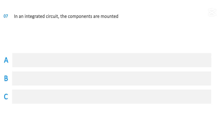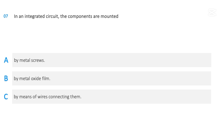In an integrated circuit, the components are mounted: by metal screws, by metal oxide film, or by means of wires connecting them. The correct answer is: by means of wires connecting them.